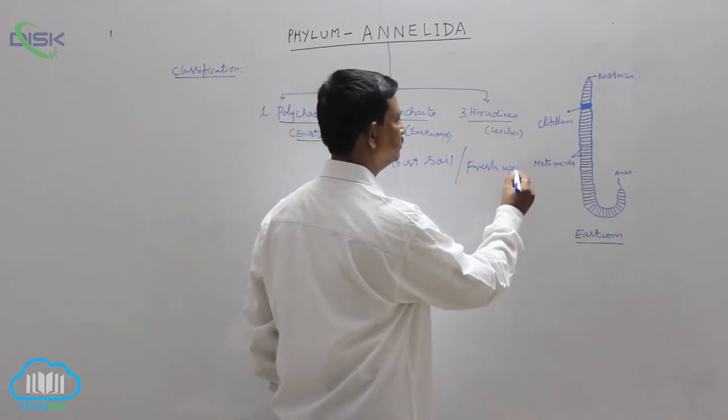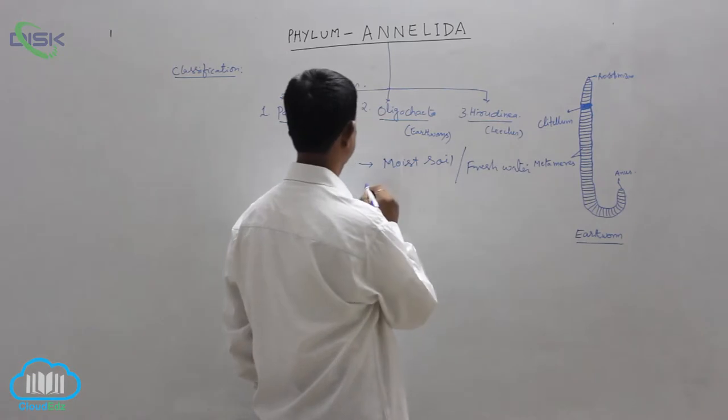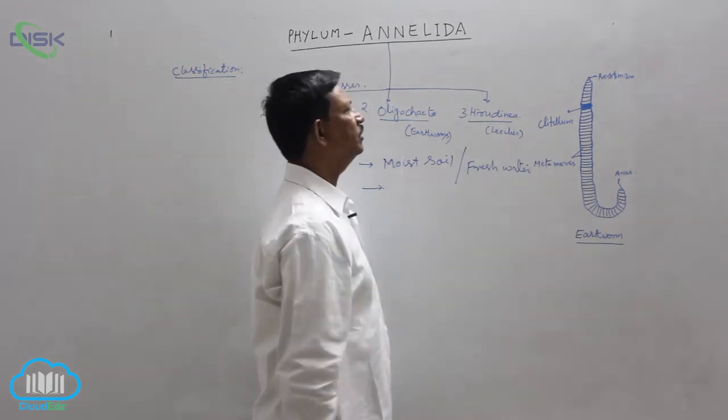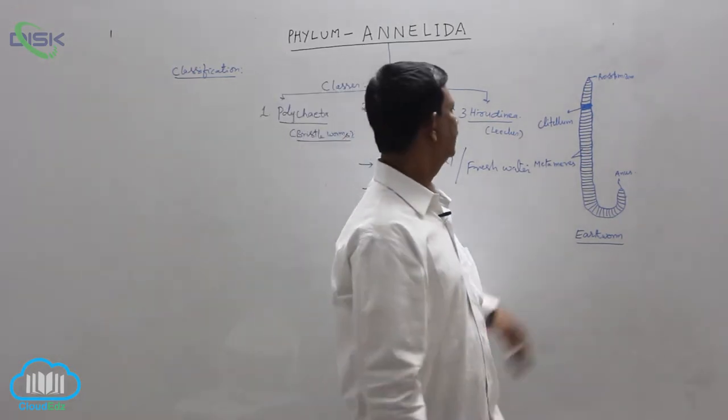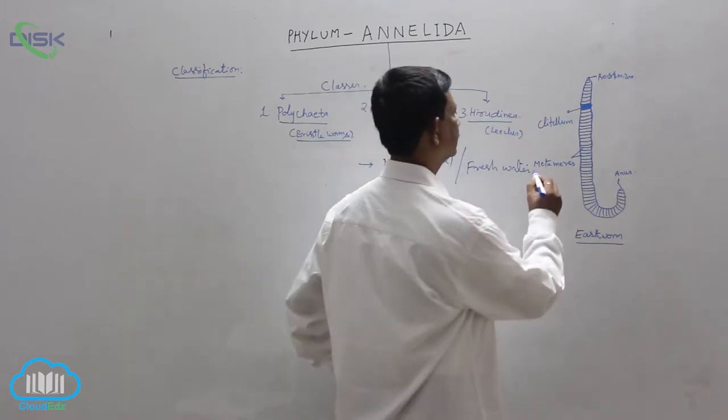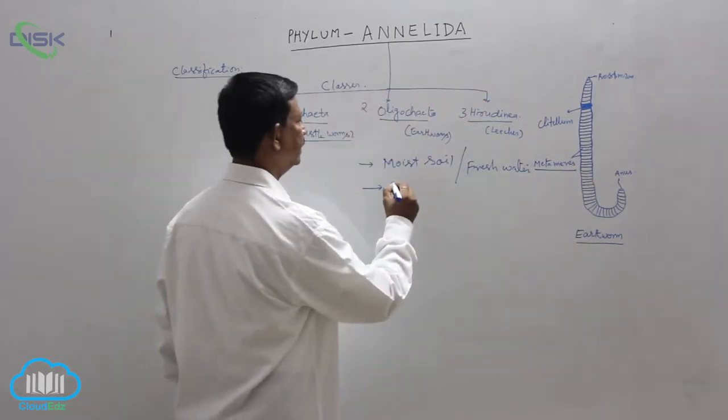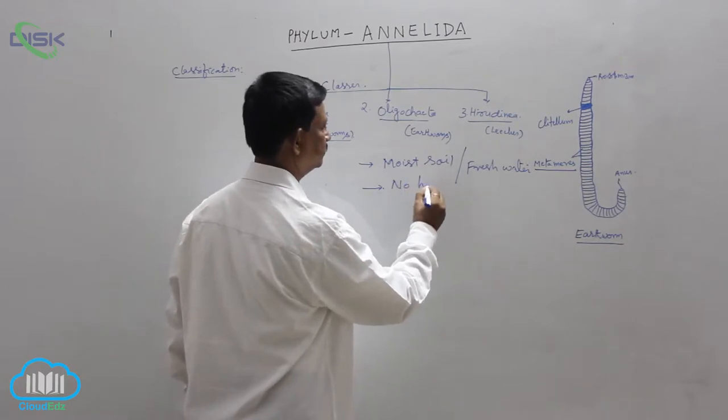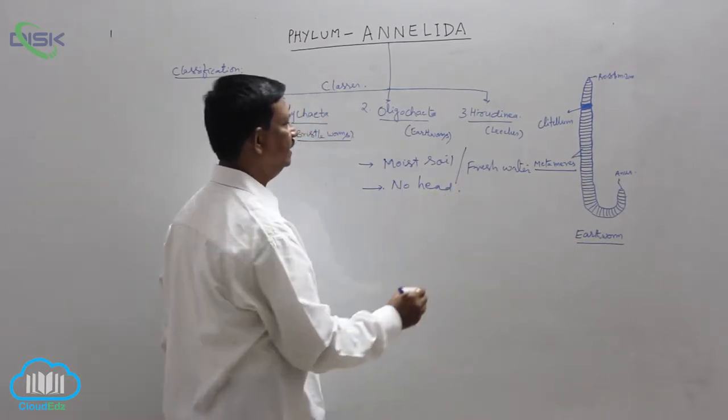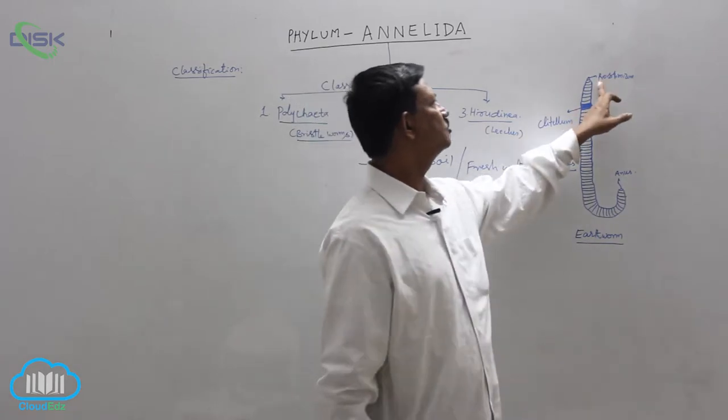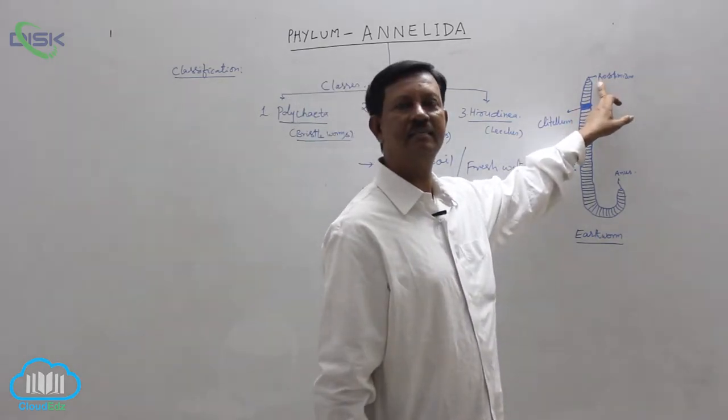The body is divided into number of segments which are known as the metameres. There is no distinct head, that is, at the anterior region of the body there is no distinct head present, and sensory organs are also absent.